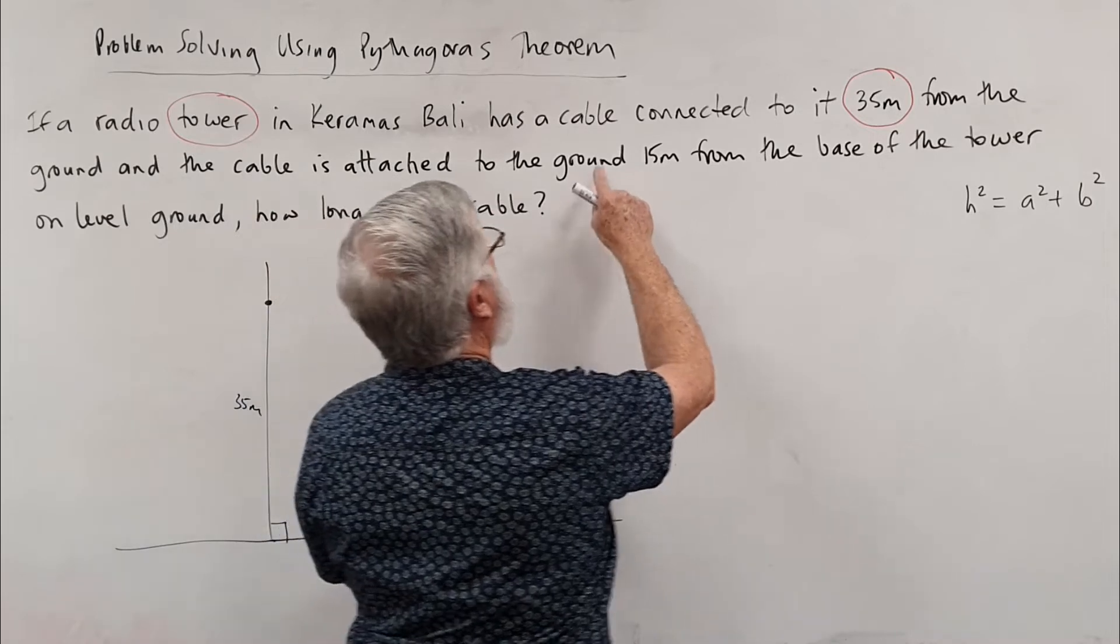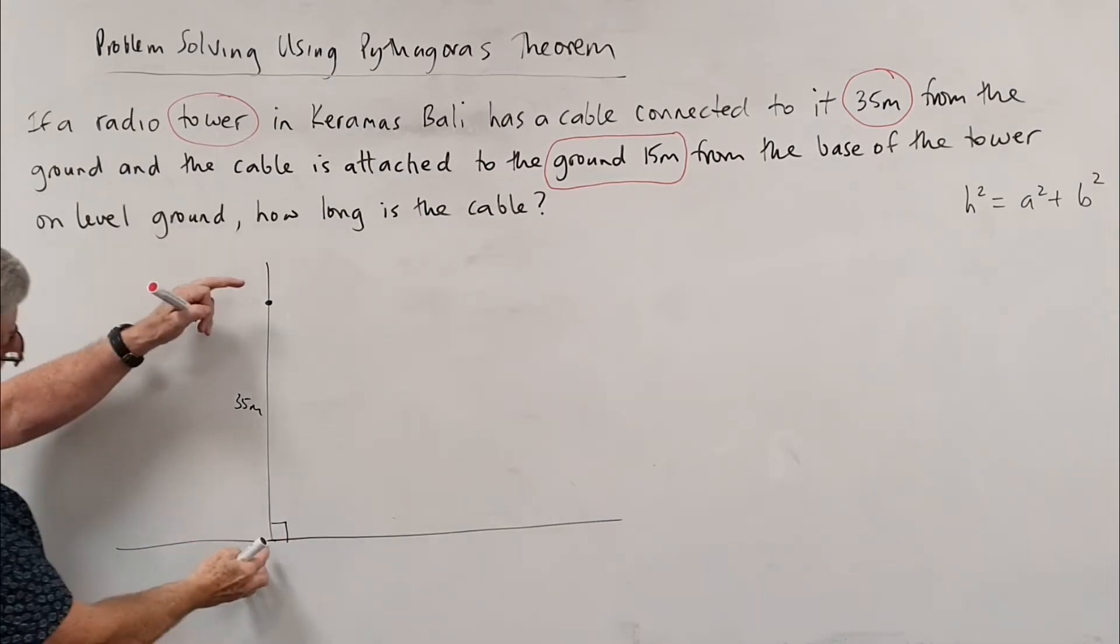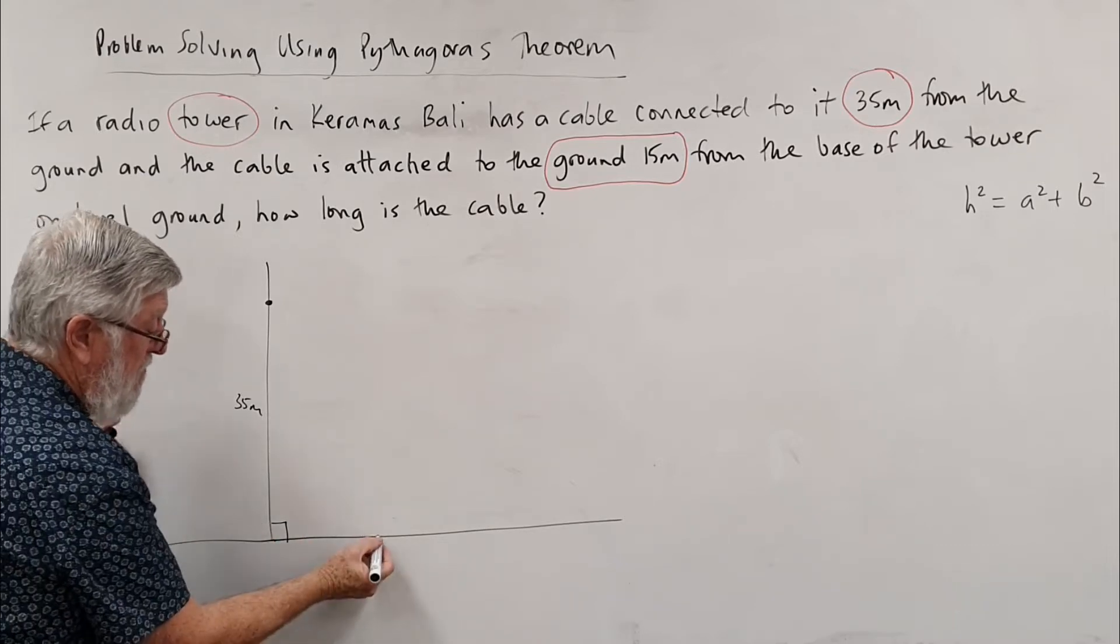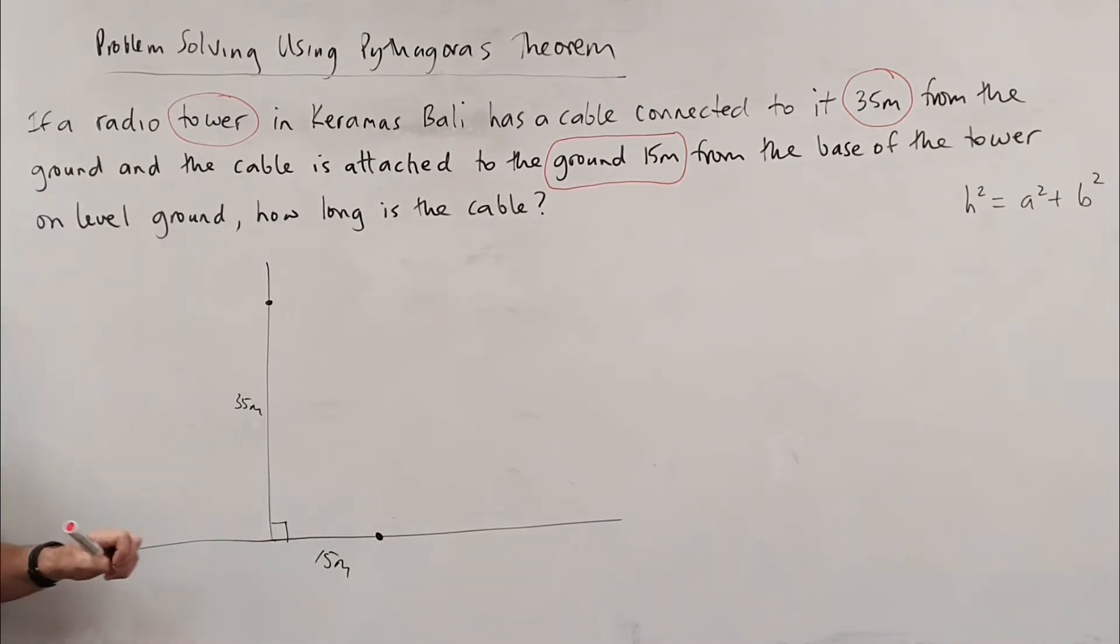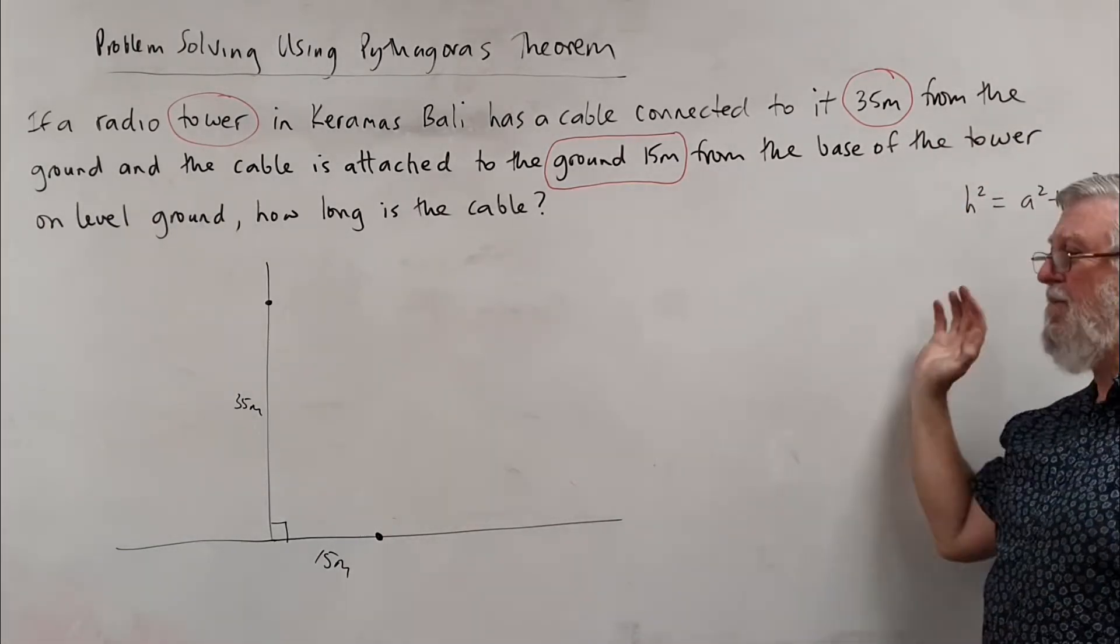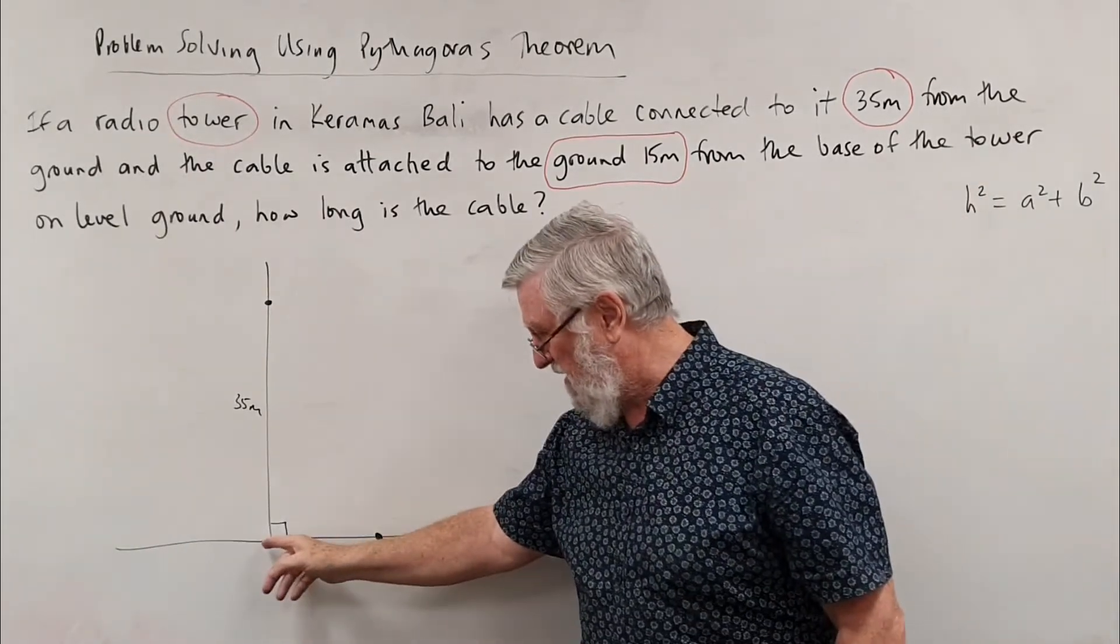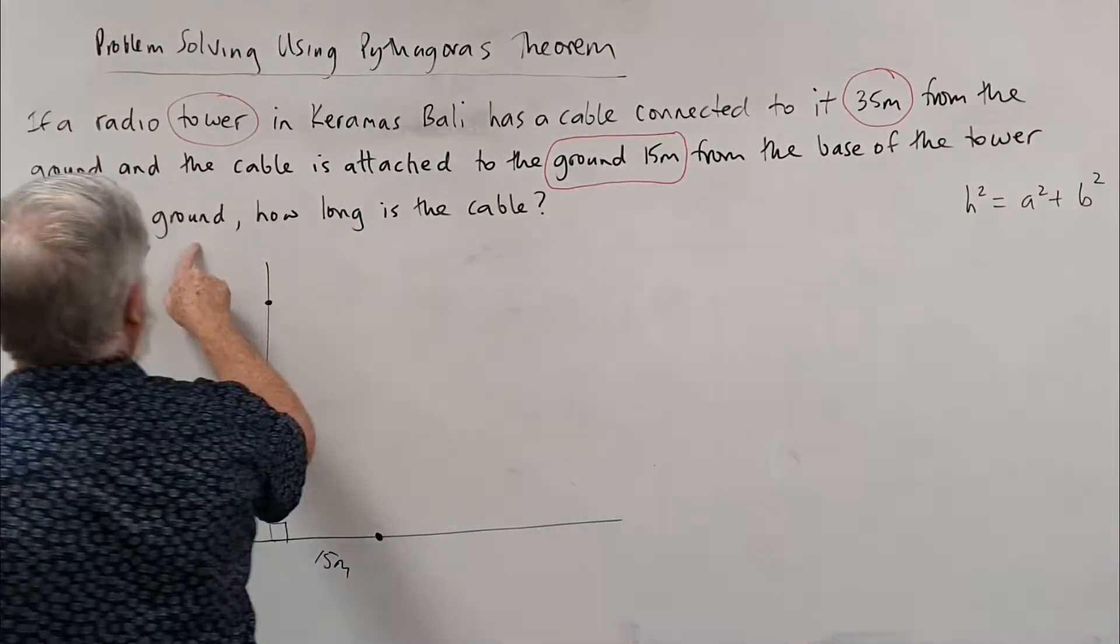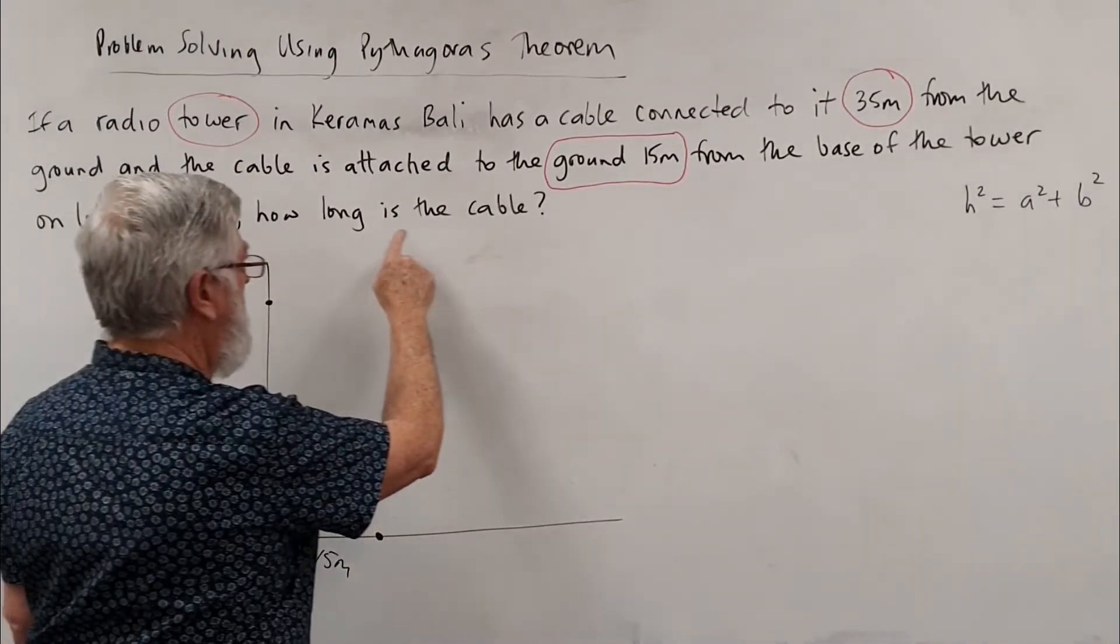Let's look at the next lot of words: the cable is attached to the ground 15 meters. If that's 35 meters, I'm going to come back in here somewhere. If that's the ground and we attach that 15 meters from the base of the tower—from the base of the tower, not from over here—and it talks about on level ground, you can presume it means level ground. It talks about how long is the cable.